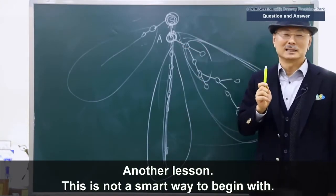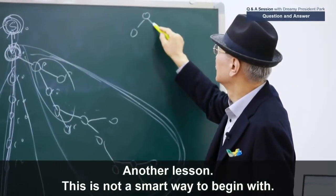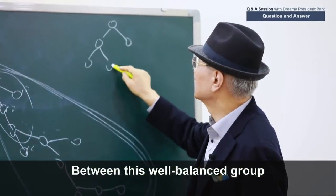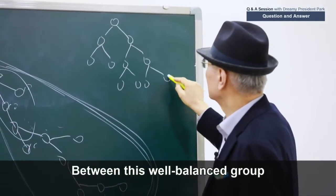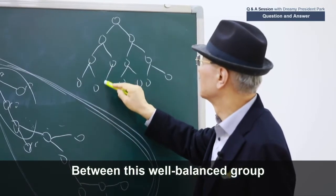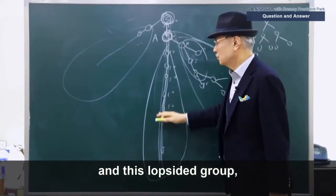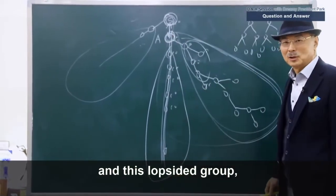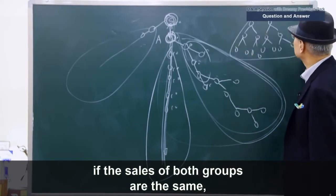Another lesson. This is not a smart way to start out. Between this well-balanced group and this lopsided group over here, if the sales of both groups are the same,